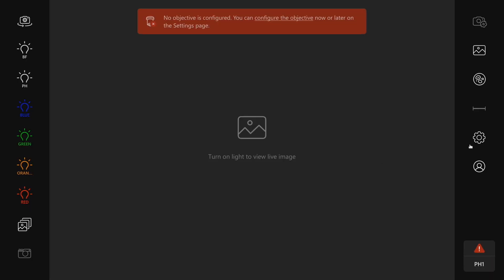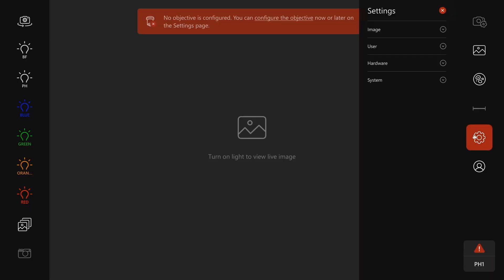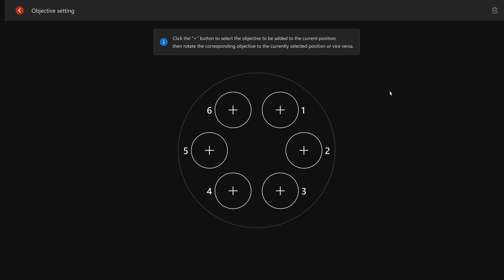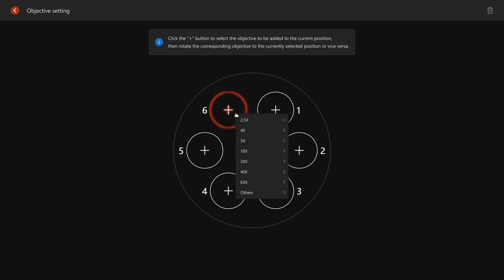To configure the objective in Mateo FL software, go to Settings, click on Hardware, and then Objective Setting. Select the physical position, numbered from 1 to 6 on the nose piece, and select the correct objective from the drop-down menu. Your objective is now configured correctly.